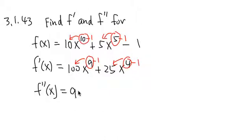100 times 9, we get 900, x to the 9 minus 1, which is 8. And plus 25 times 4, which is 100, and you have x to the third power. Here's the first derivative. And here's the second derivative.